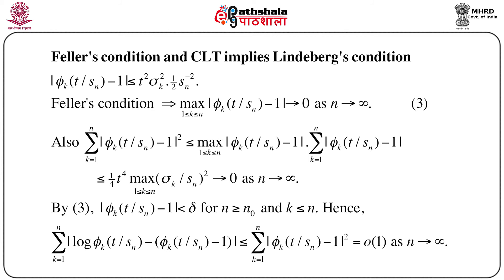By these results, |φ_k(t/s_n) - 1| < δ for n ≥ n₀ (n₀ large) and k ≤ n. Hence Σ_{k=1}^{n} |log φ_k(t/s_n) - (φ_k(t/s_n) - 1)| ≤ Σ_{k=1}^{n} |φ_k(t/s_n) - 1|² = o(1).